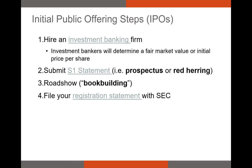The next step is to set the price in the S1 statement, which when completed is called the registration statement. Once the firm puts the price and the number of shares they're going to sell in that statement, they send it to the SEC. If the SEC doesn't ask for any revisions to the registration statement, the firm will sell its shares to the syndicate's clients at that price. Part of the cash raised will be used to pay the investment bank's fee — referred to as flotation costs — which is historically around 7% of the cash raised.